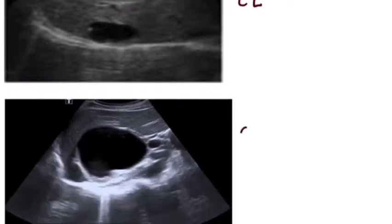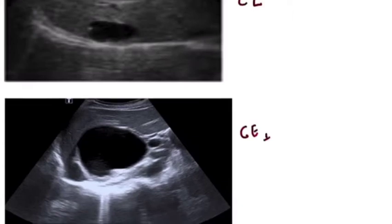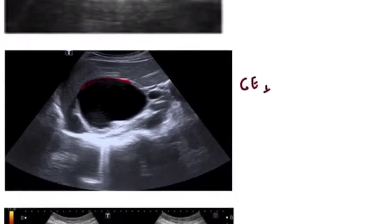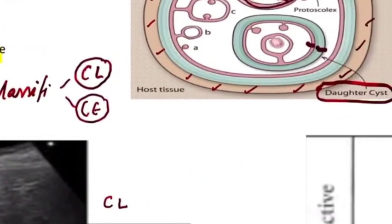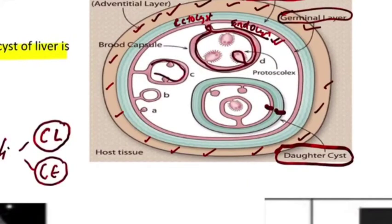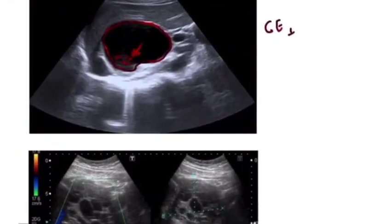The next is Cystic Echinococcus stage 1, CE1. This is also an anechoic cystic lesion, but there are fine internal echoes settled within it. These internal echoes represent the hydatid sand — the fluid and protoscolices that originate from ruptured brood capsules. The CE1 stage is the anechoic lesion with settled debris known as hydatid sand.